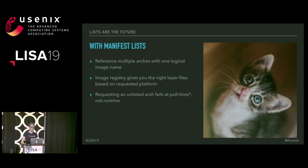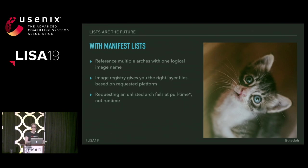Manifest lists are the future — they are the most recent spec. Many popular images already use them: Busybox, Ubuntu, CentOS, and more. By supporting multiple architectures under a single name, docs can point to one name and have it work for any supported architecture. If the architecture isn't supported, it'll fail at pull time, not run time — most of the time.